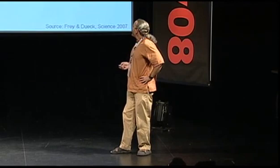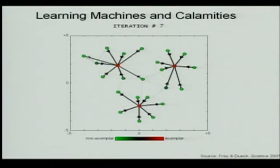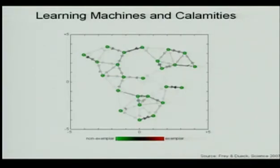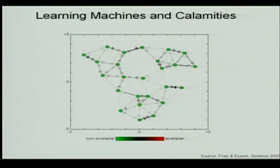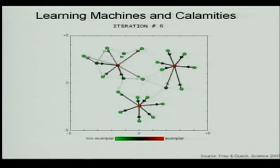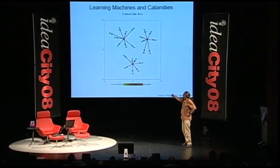So now I'll show you the results of an algorithm we developed that was published in Science last year. The algorithm works by exchanging little packets of information between potential locations until a good solution emerges for where the centers should be. You can see these messages being exchanged between villages until it converges — we drop off the supplies here, here, and here, and these villages access those supplies.